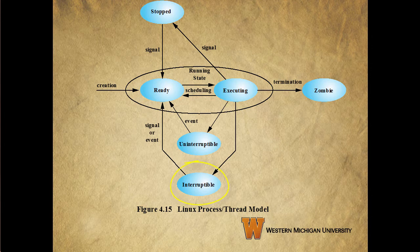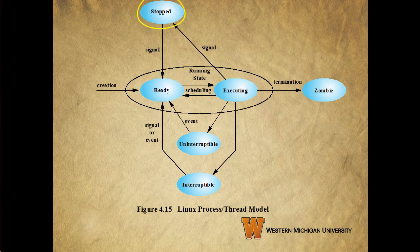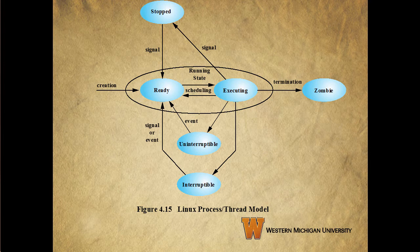The interruptible state is a blocked state in which the process is waiting for an event, such as the end of an I/O operation, the availability of a resource, or a signal from another process. There's another blocked state called uninterruptible — the difference is that in this state a process is waiting directly on hardware conditions and therefore won't handle any signals. The stopped state indicates that a process has been halted and can only resume by positive action from another process — for example, a process being debugged could be put into the stopped state. Finally, the zombie state is when a process has been terminated but still has its task structure in the process table. This can occur for child processes where the entry is still needed to allow a parent process to read its child's exit status, and once the exit status is read via the wait system call, the zombie's entry is removed from the process table and that's said to be reaped.